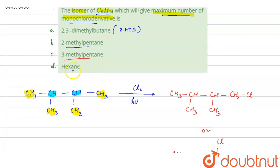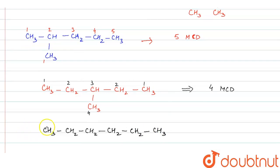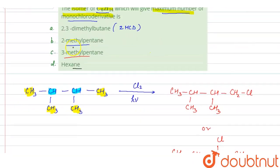In the fourth option we are given hexane: CH3-CH2-CH2-CH2-CH2-CH3. You can see that carbon 1 and carbon 6 are the same, carbon 2 and carbon 5 are the same, and carbon 3 and carbon 4 are the same. So from hexane we can get a maximum of 3 monochloro derivatives. In 3-methylpentane we get 4, and in option D hexane we get 3 monochloro derivatives.